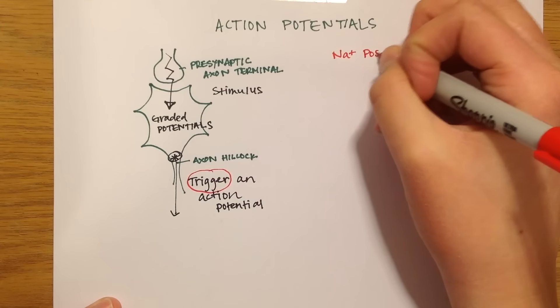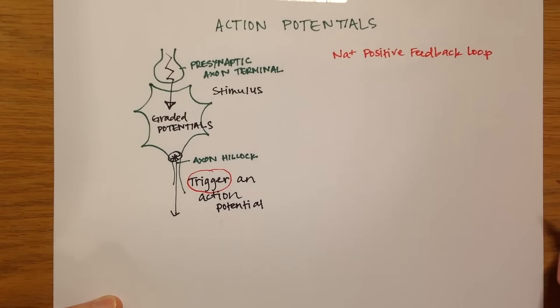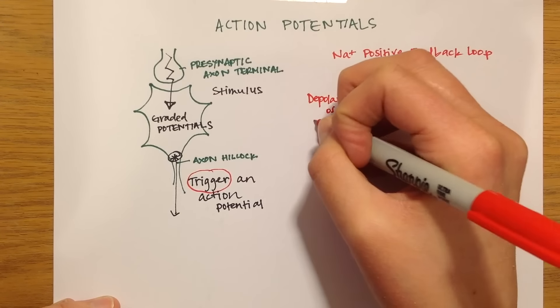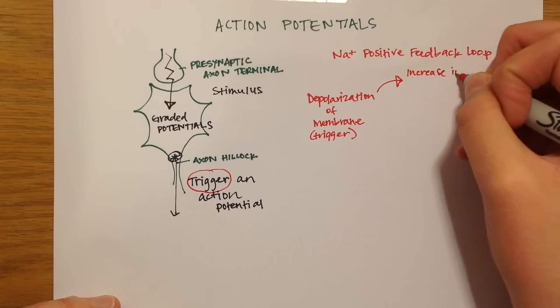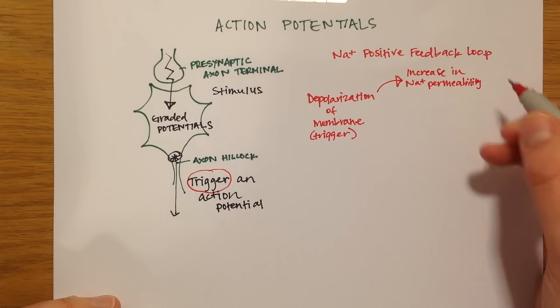When an action potential is triggered, a positive feedback loop with sodium begins to take place. The trigger causes a depolarization of the membrane which causes the activation gate in the voltage-gated sodium channel to open.